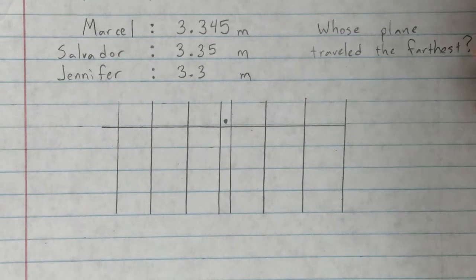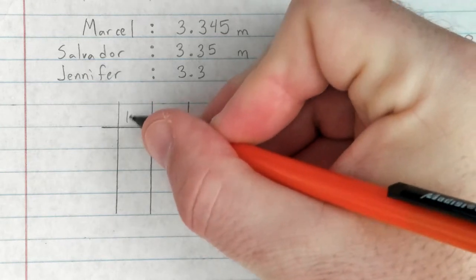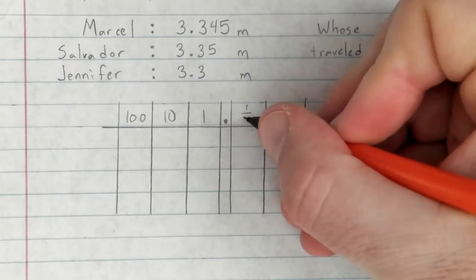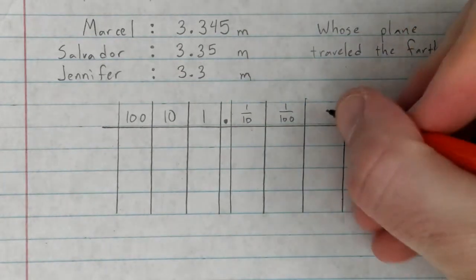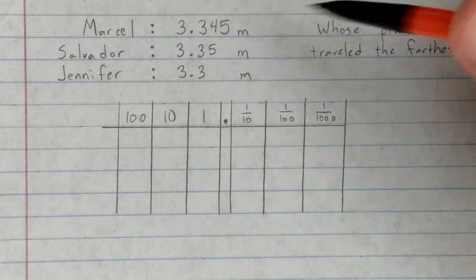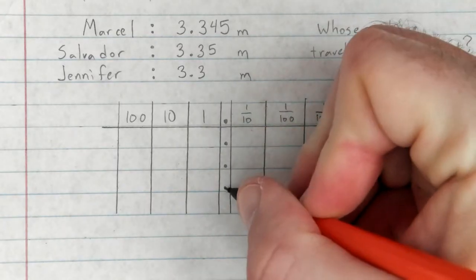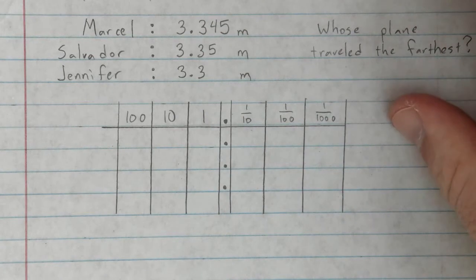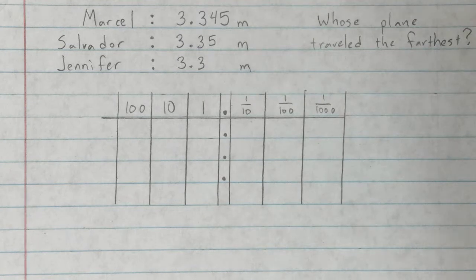In fifth grade we don't really go out any further than that. So ones, tens, hundreds, tenths, hundredths, thousandths. Put these numbers into the place value chart, build out around the decimal point, and let's see which one shows the plane that traveled the farthest. Go ahead and pause the video. Whose plane traveled the farthest?